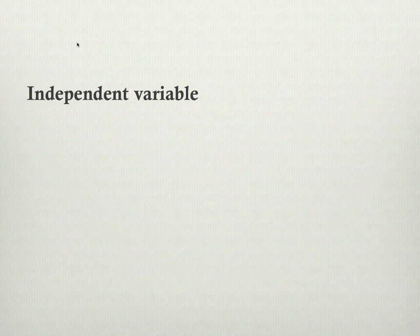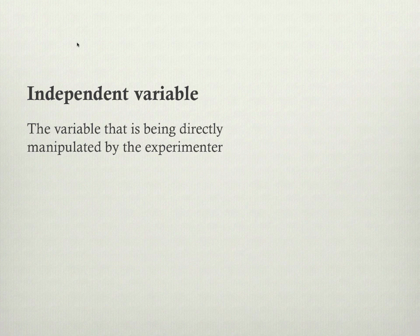That's the underlying concept of why we do an experiment. Now we just want to add a little of the vocabulary that scientists use. When they're talking about experiments, they call the variables by special names. One of them they call the independent variable, and this is the variable that is being directly manipulated by the experimenter.